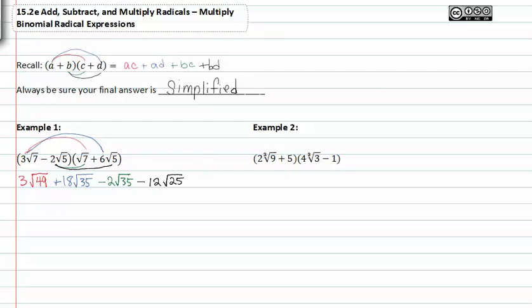We can now look at these to determine which like terms could be added, and also to see if anything can be simplified. Thirty-five is three times seven, so this cannot be simplified further under the radical, but if you'll notice these two are like terms and we can add them together. And lastly minus twelve root twenty-five.